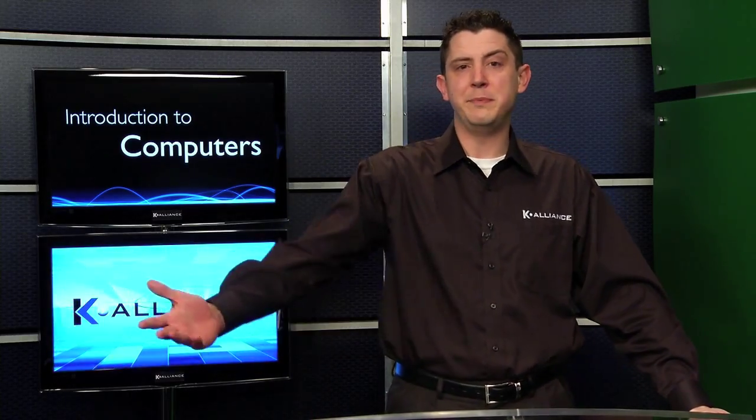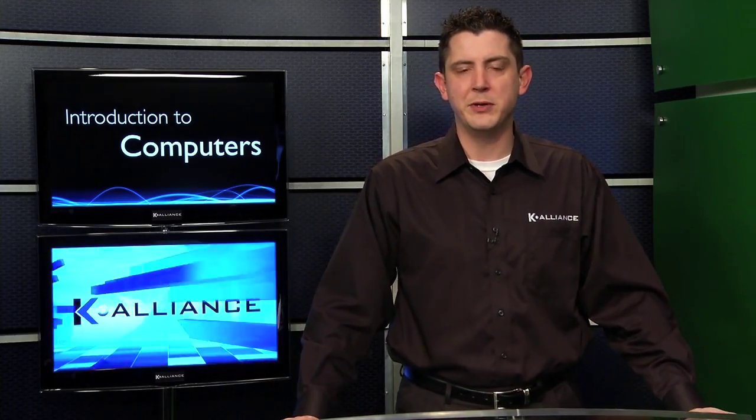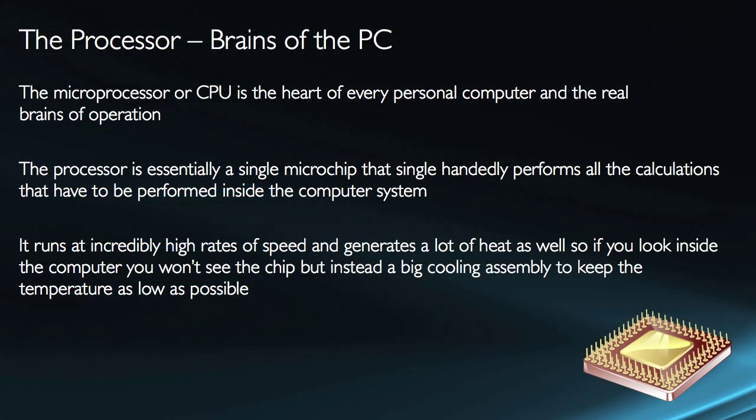The first component we want to deal with is the processor, also known as the microprocessor or central processing unit — CPU. You hear a lot of people refer to it as the CPU, and in some cases they're actually talking about their whole computer. They say 'the CPU' and point to the box that represents the desktop computer. Accurately, the CPU is certainly the heart of the personal computer and the real brains of the operation, but it is just one component — not the whole thing.